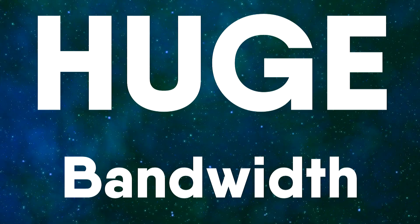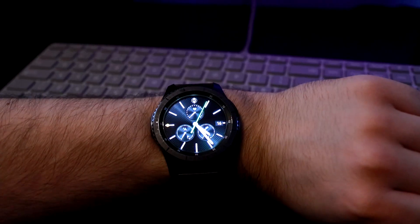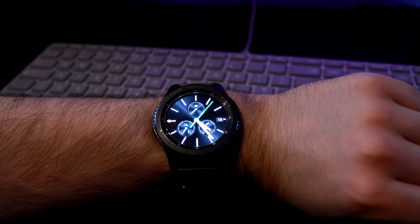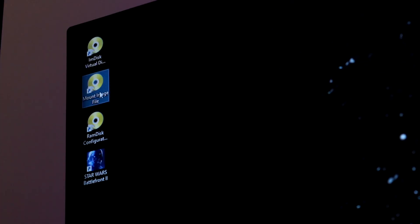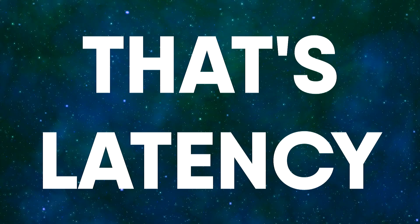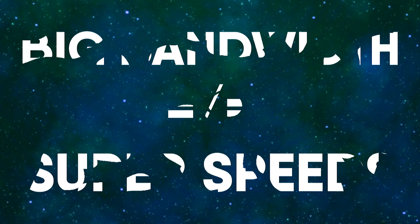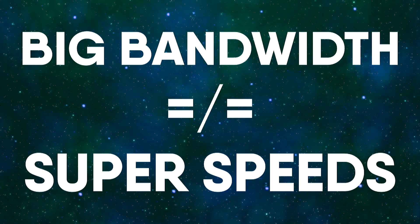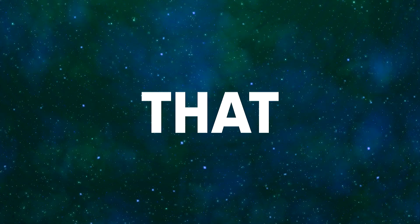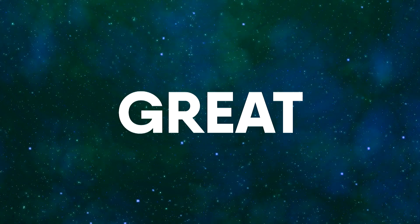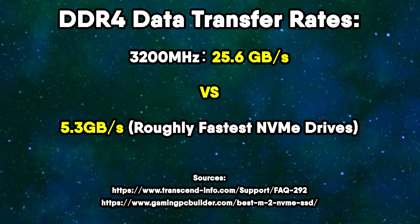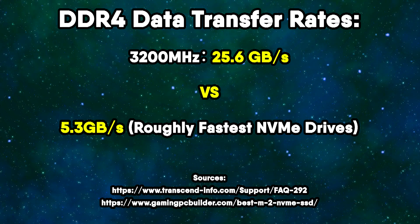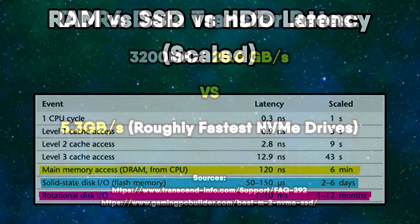That's a huge bandwidth. But if you're trying to move your mouse and have to wait a few minutes to find out if you've selected the right icon — even though you've transferred lots of data, it's not going to be very useful. That's latency. So even if you have huge bandwidth, you still need a small enough latency for things to work properly. RAM has the benefit of huge bandwidth, but it also has the benefit of tiny, tiny latency.